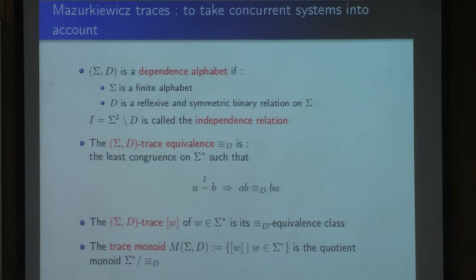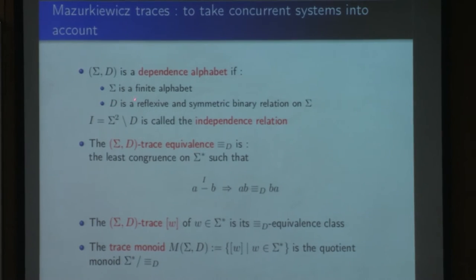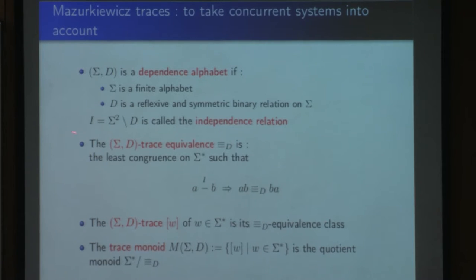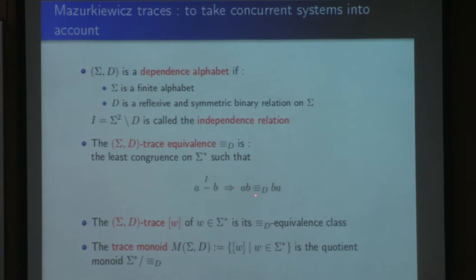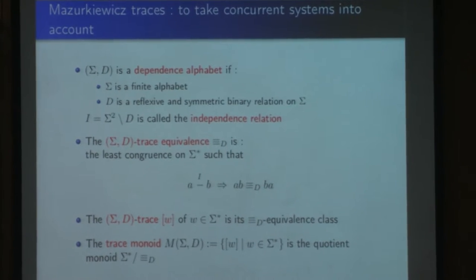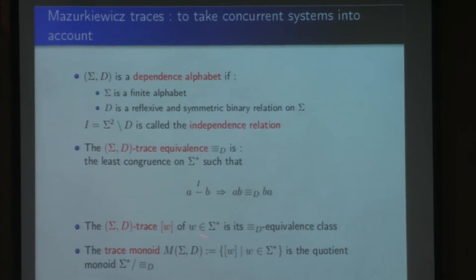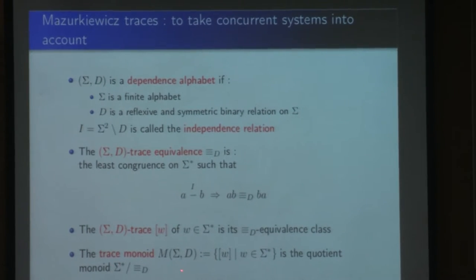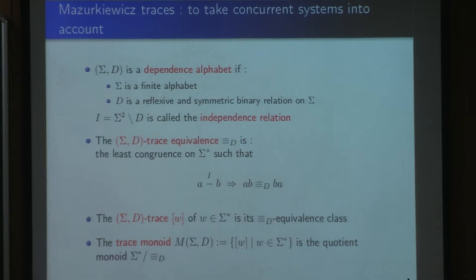Here I recall the basic definitions. To obtain traces, we start from a dependence alphabet — a finite alphabet sigma and a reflexive and symmetric binary relation on sigma, called the dependence relation. The complement of the dependence relation is the independence relation. On the free monoid sigma*, we consider the least congruence such that if two letters A and B are independent, then the words AB and BA are equivalent. The trace of a word is just its equivalence class, and the trace monoid M(sigma, D) is the quotient monoid of sigma* under trace equivalence.